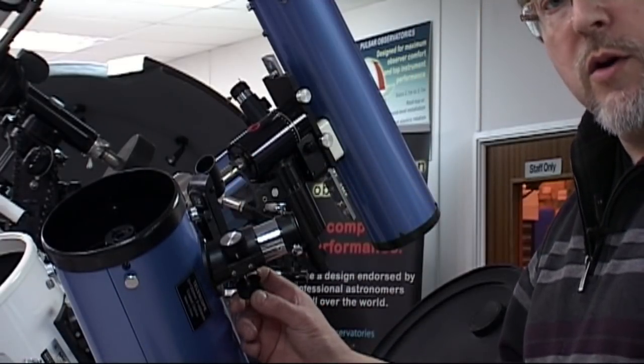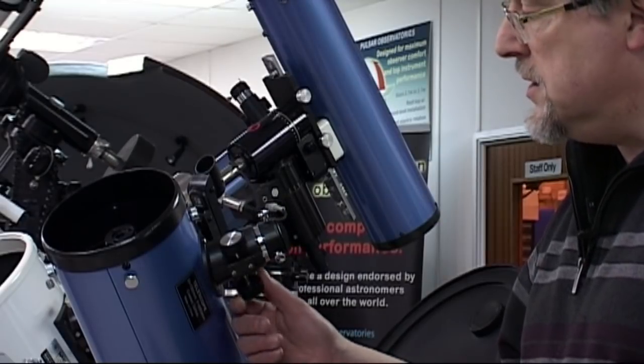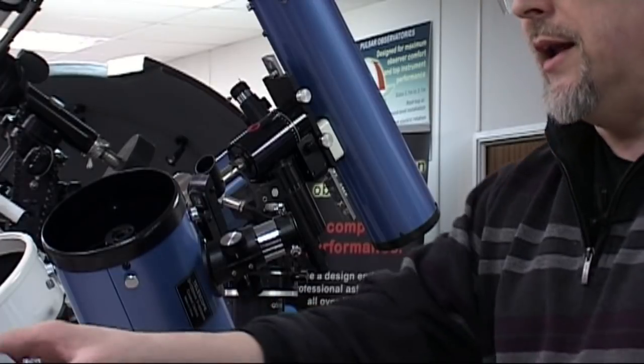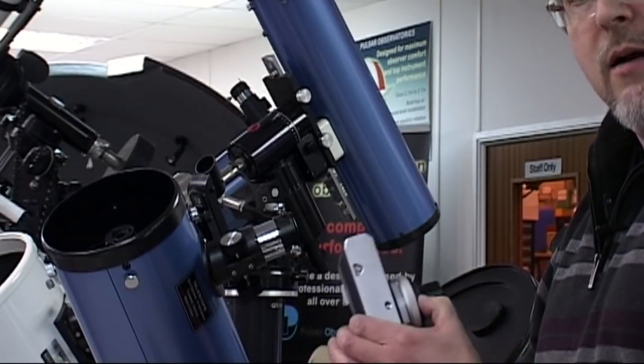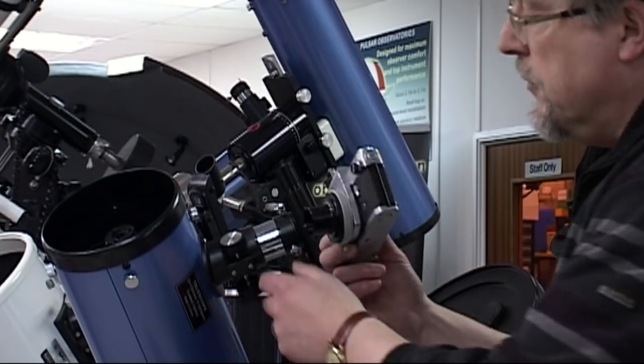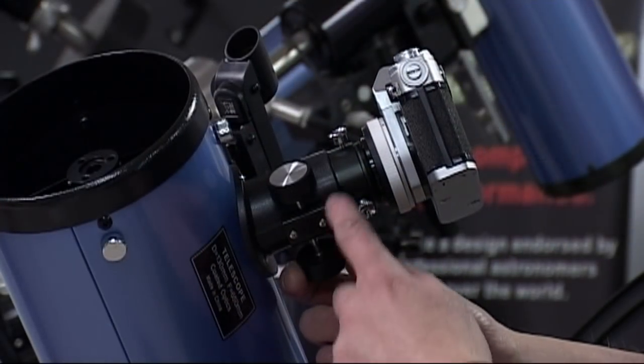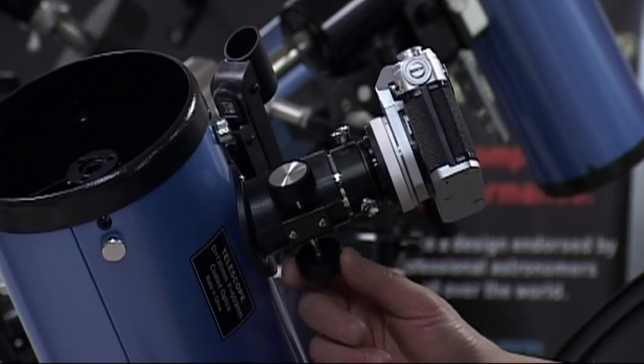And you notice we've got about 30 millimeters here of inward focuser movement on the telescope before we get that collision problem. Now bear in mind we've got 45 mil to clear with our camera on here, so we've got a problem. It's actually not going to work - we're not going to be able to move the focuser in far enough to get that image into focus.